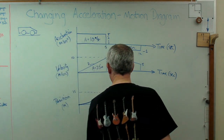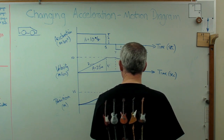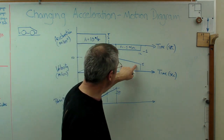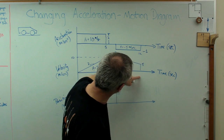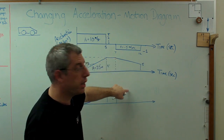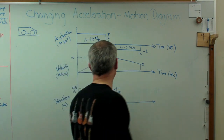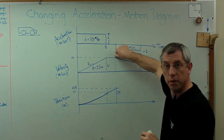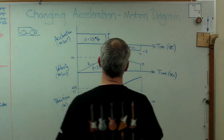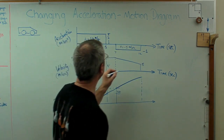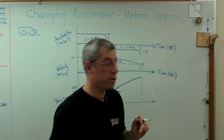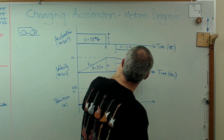During the coasting segment, the velocity is constant at 10 m/s, so the area is a rectangle: base 2 times height 10 equals 20 meters change in position. That brings the total position to 45 meters. Since velocity doesn't go to zero at the end, there will be a positive slope throughout. In the deceleration phase, the velocity is still positive but decreasing, so the position curve has a positive but decreasing slope — the position is still increasing, just at a reducing rate.